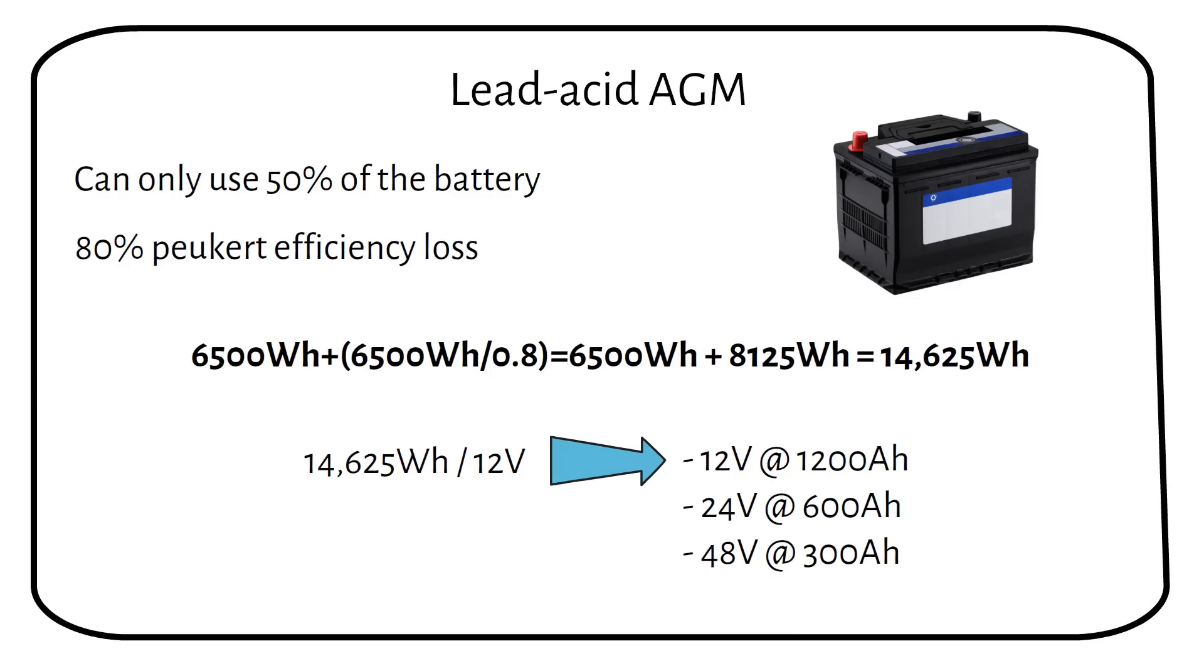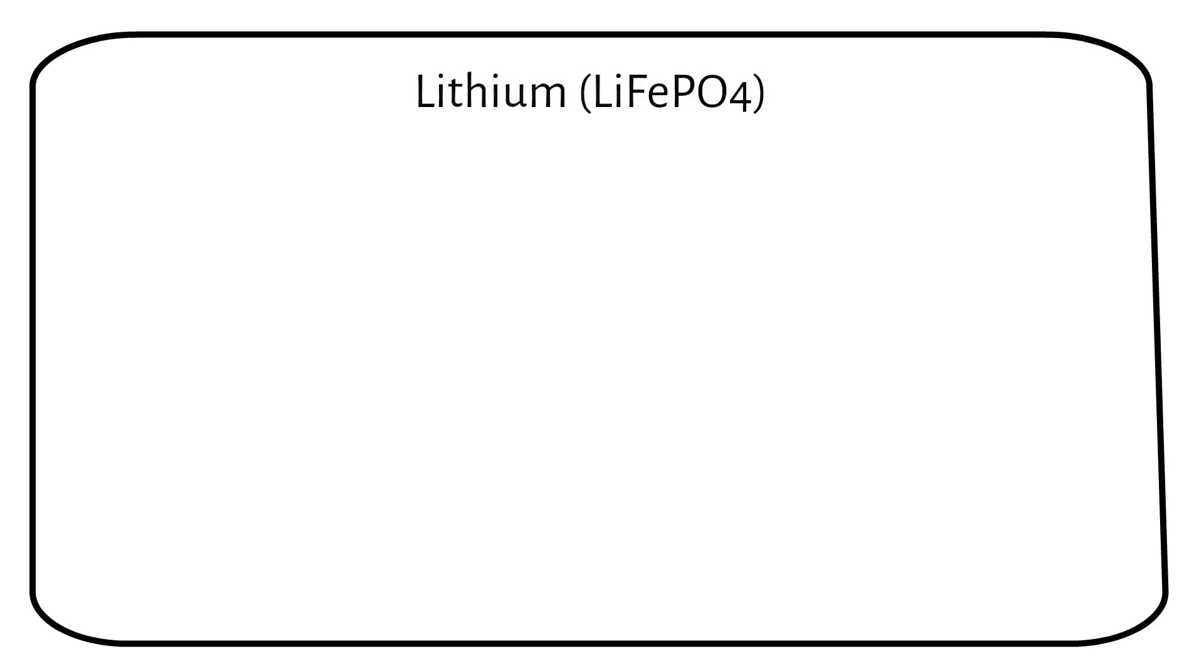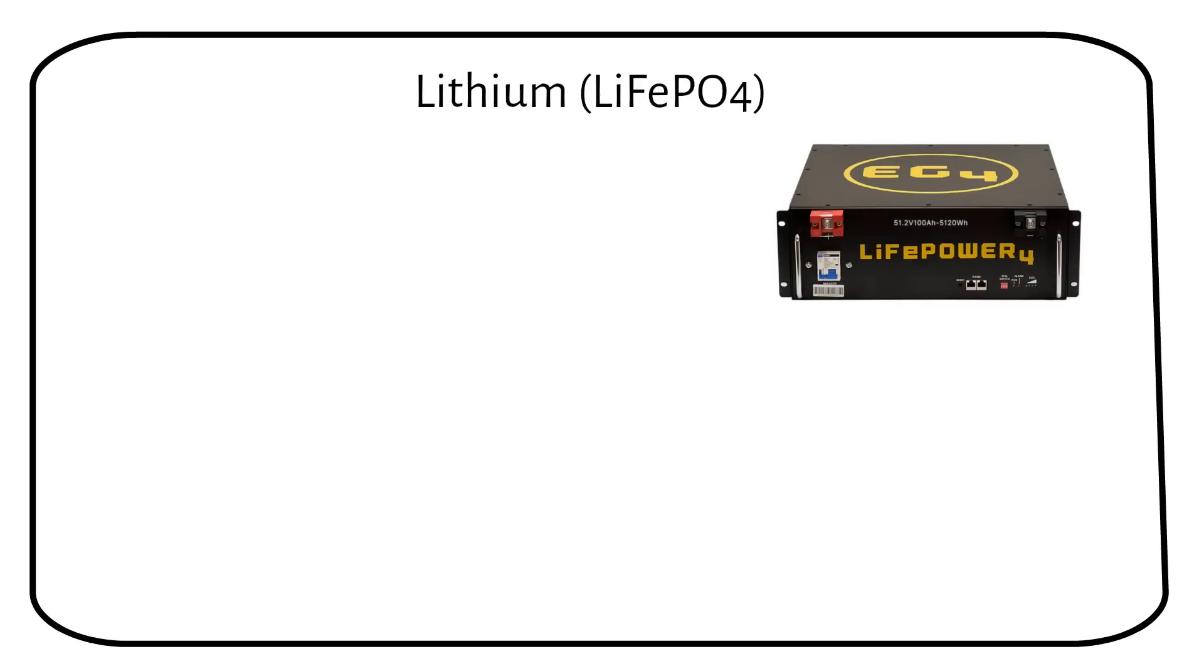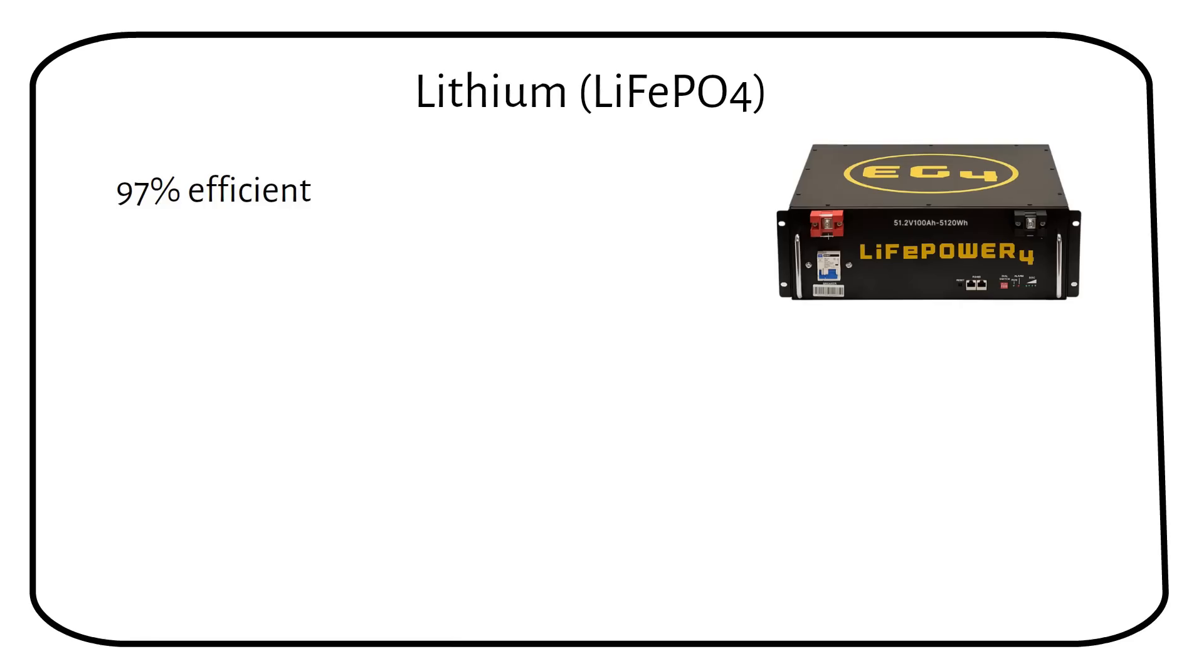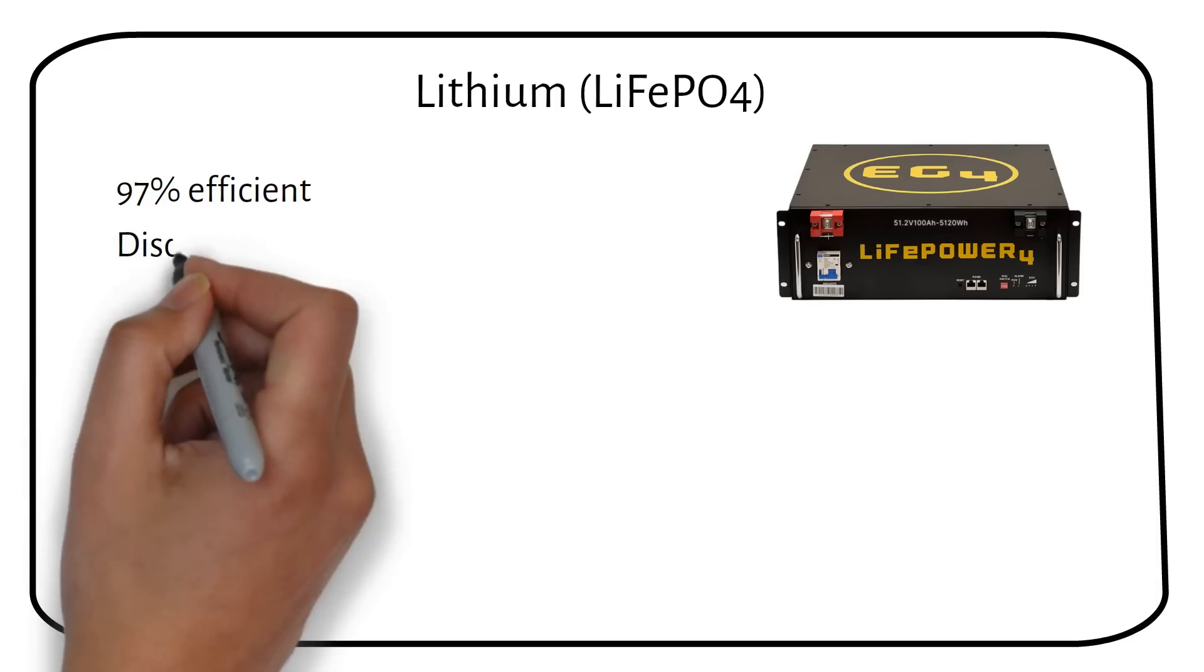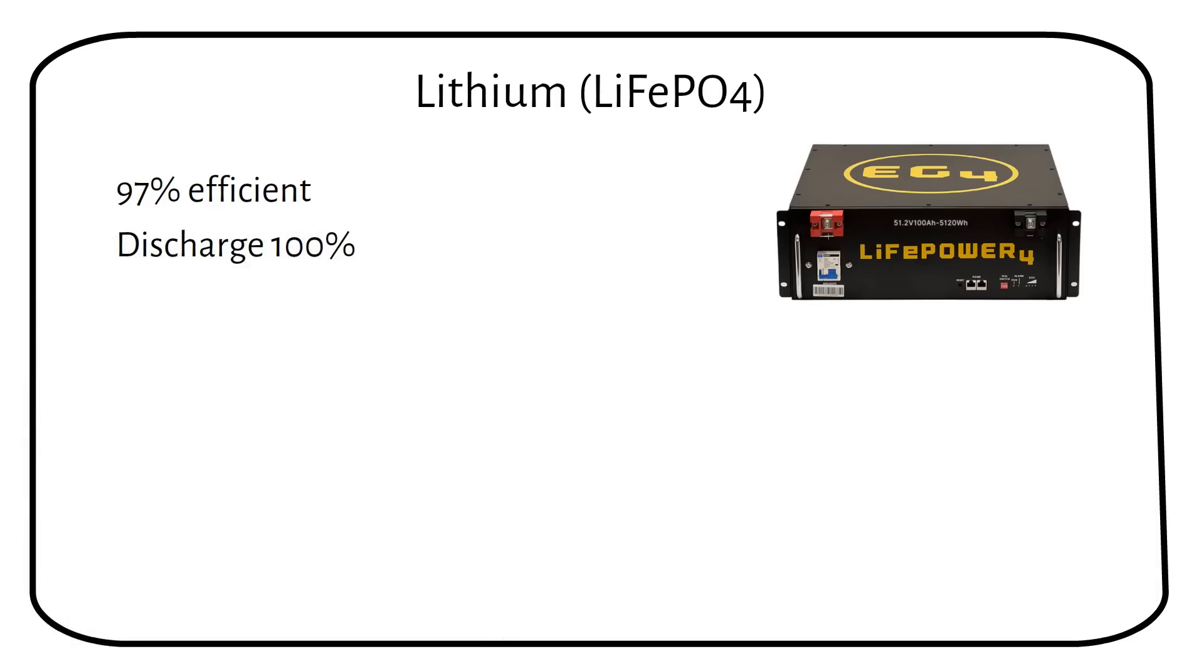Are you keeping up? Let's explore the more favorable lithium iron phosphate battery. A lithium iron phosphate battery, on the other hand, is more efficient. It comes in at 97% efficiency. We can discharge 100% lithium and still have 80% remaining capacity left after 6000 cycles.